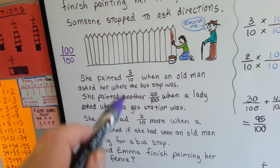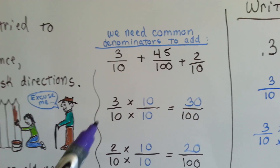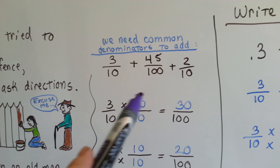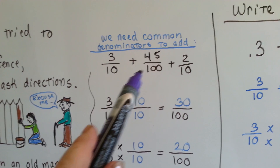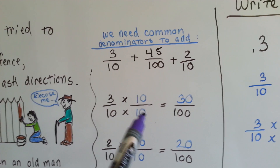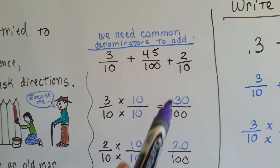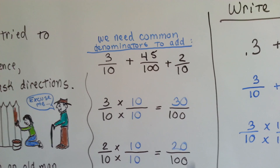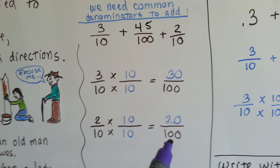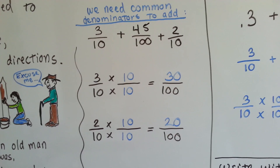So let's change the 3-tenths and 2-tenths to have the same denominator as the 45 one-hundredths. We have 3-tenths plus 45 one-hundredths plus 2-tenths. We need the 10 to become 100, so we multiply it by 10. The numerator gets jealous — it wants to be multiplied by 10 too. 10 times 3 is 30, so that's 30 one-hundredths. We do the same with the 2-tenths: multiply by 10 to get 20 one-hundredths.